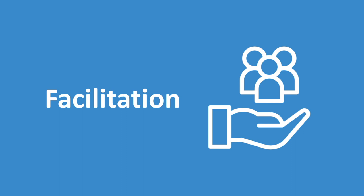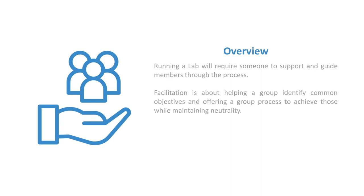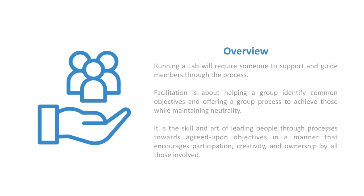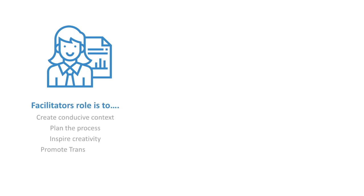That's the process at the center of the Systems Innovation Lab. Now we'll talk about facilitation — how to facilitate that process when running a lab. Running a lab requires someone to support and guide members through the process. The job of the facilitator is about helping a group identify common objectives and offering a process to achieve those while maintaining neutrality. It's a skill and art of leading people through processes towards agreed objectives in a manner that encourages participation, creativity, and ownership by all involved. The facilitator creates a conducive context, plans the process, inspires creativity, promotes transparency, adapts processes as needed, and creates the flow of activities.